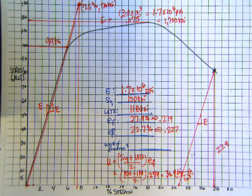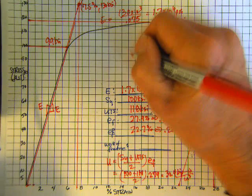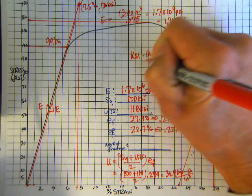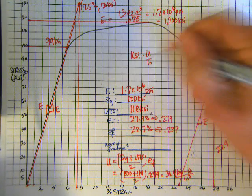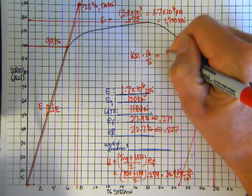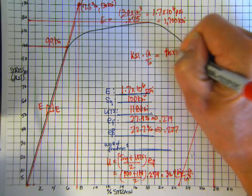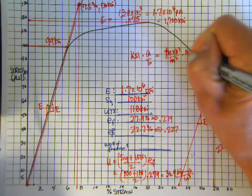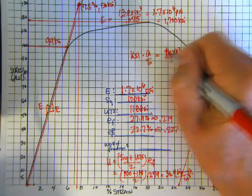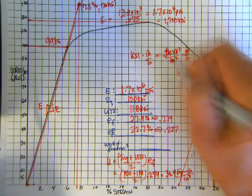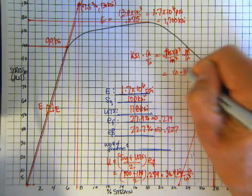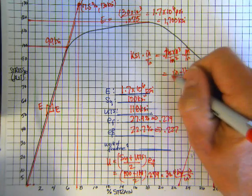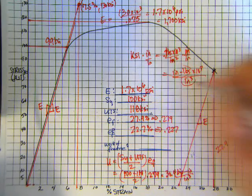Well, strain doesn't have units, does it? Well, it does. So what you have is KSI times inches per inch. Now if we regroup, or if we split that out, then that would be pounds, thousands of pounds, right, per square inch times inches per inch. Oh, if I group my numerator terms and my denominator terms, that becomes inch-pounds times 10 to the 3 over cubic inches.